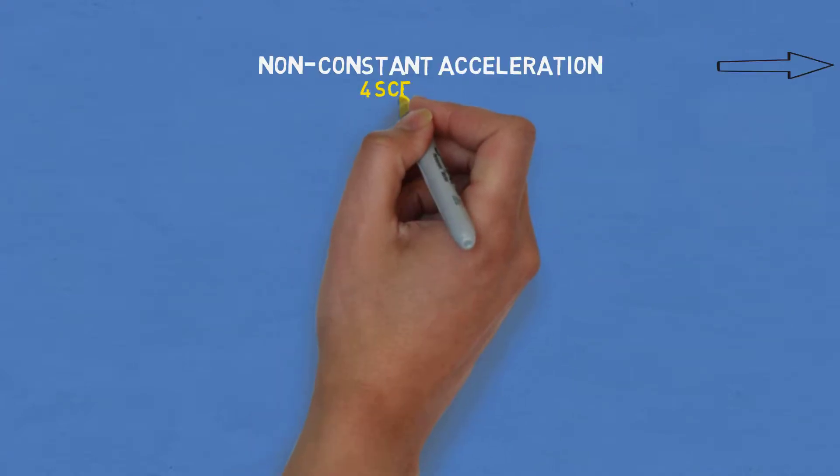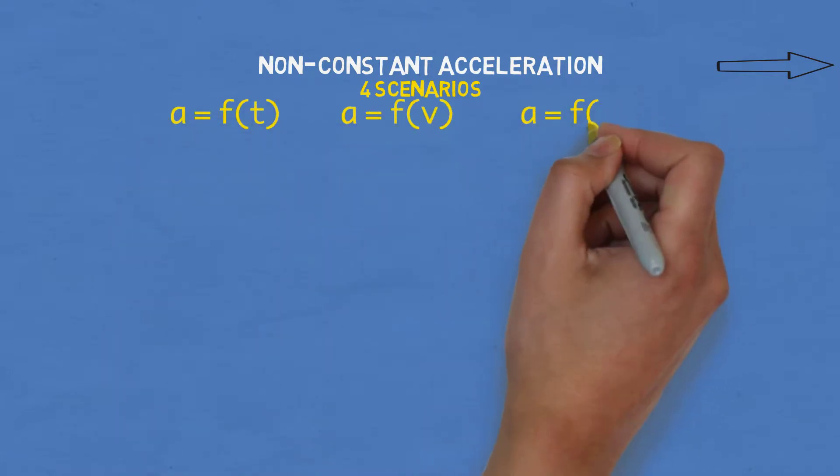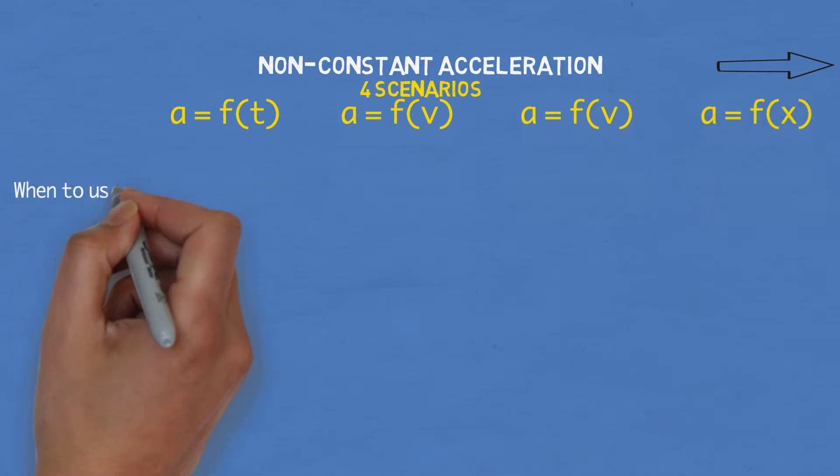There are four different scenarios of this in the specialist course. You've got a equals f(t), a equals f(v), a equals f(v) again, and a equals f(x). We'll cover when to use each of them, the different forms you can write acceleration in, and lastly I will give you a simple example.